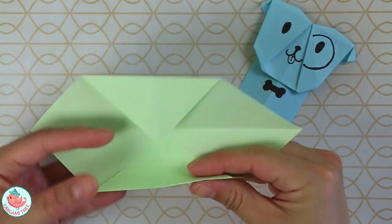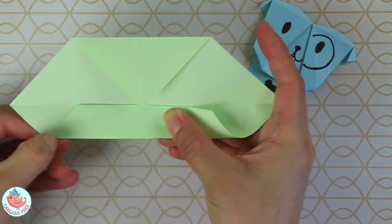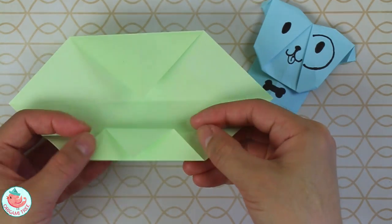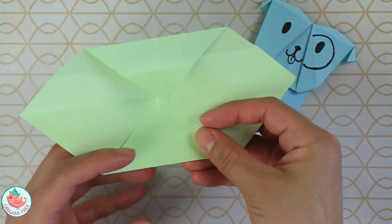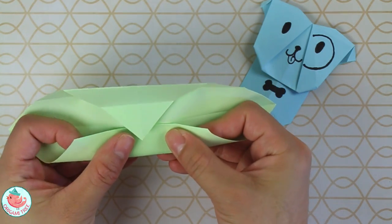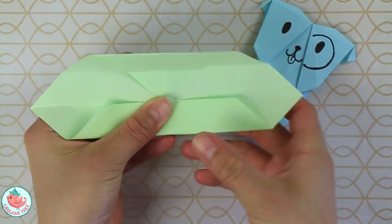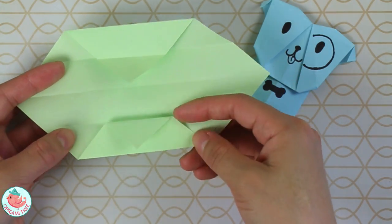Now take the bottom side and fold it all the way to the center. Crease that in. Unfold. Rotate and repeat the same thing on this side—just fold straight up to the center and crease it in. Then unfold everything.